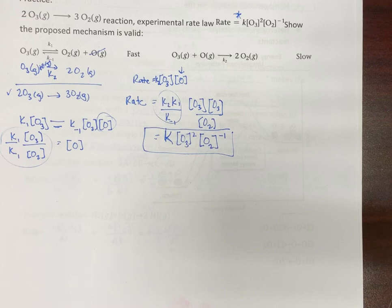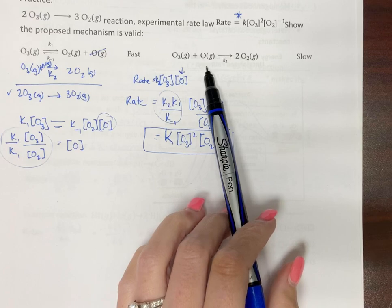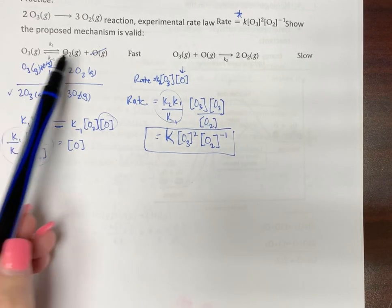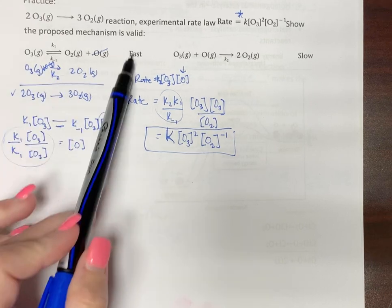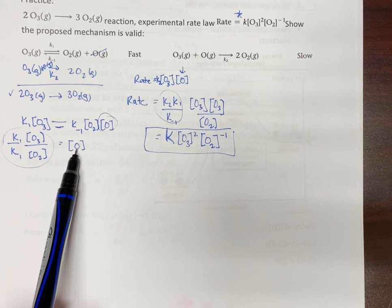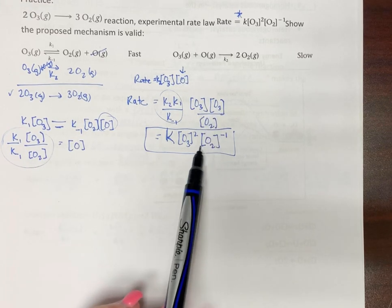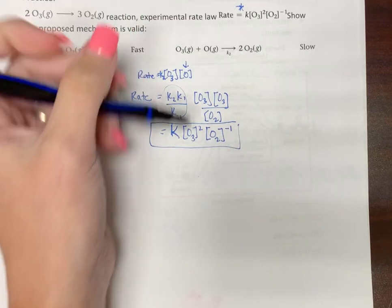So this is not nearly as hard as you probably think it is, it's just weird. So if you get something where the slow step has an intermediate that's not in your final reaction, take something that occurs before it, set it at equilibrium, isolate the intermediate and plug it back in. And so look, it matches.